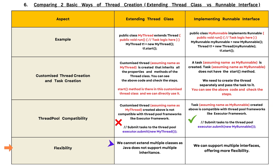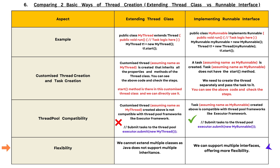The fourth difference is flexibility. When we extend the Thread class, we cannot extend multiple classes, as Java does not support multiple inheritance. By implementing the Runnable interface, we can support multiple interfaces, offering more flexibility.